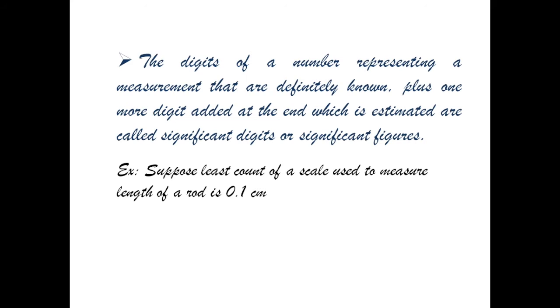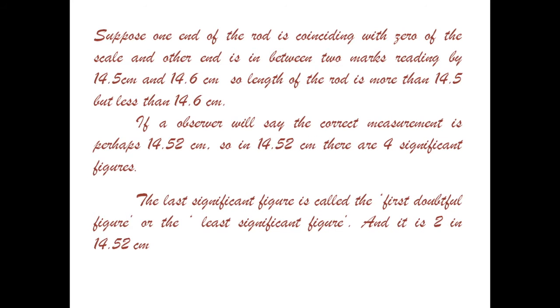Suppose one end of a rod is coinciding with zero of the scale and the other end is in between two marks reading by 14.5 cm and 14.6 cm. So the length of the rod is more than 14.5 cm but less than 14.6 cm.